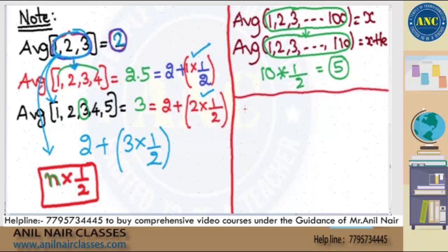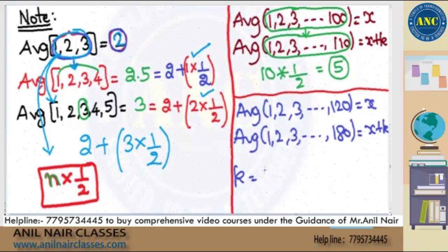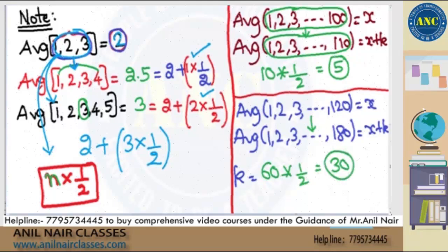Try to answer this without using pen: average of 1, 2, 3 till 120 is X, and average of 1, 2, 3 till 180 is X plus K — what is K? Earlier 120 terms, now 180 terms, so you increased by 60 terms. Using our formula, 60×(1/2) = 30. K value is 30.